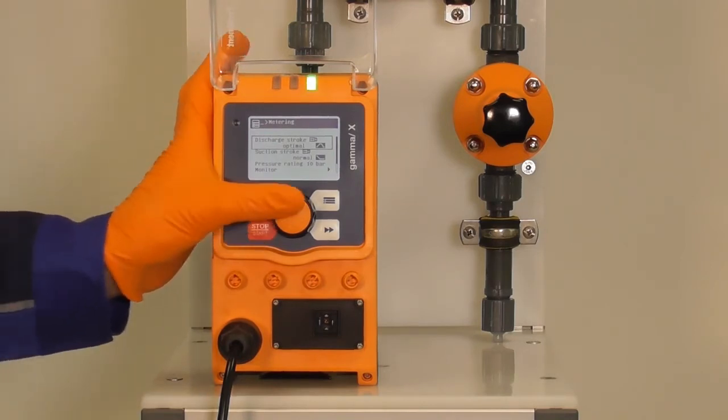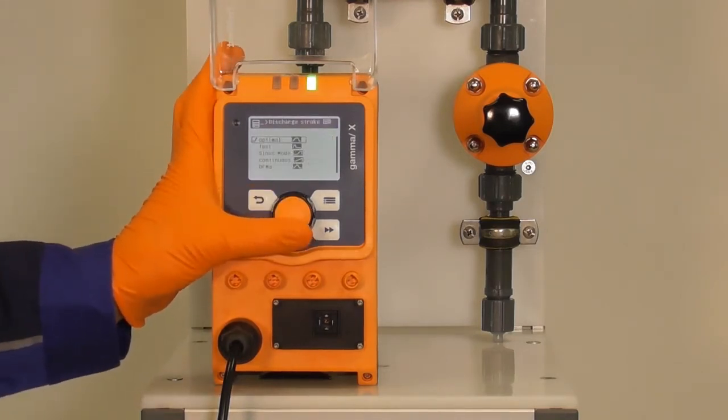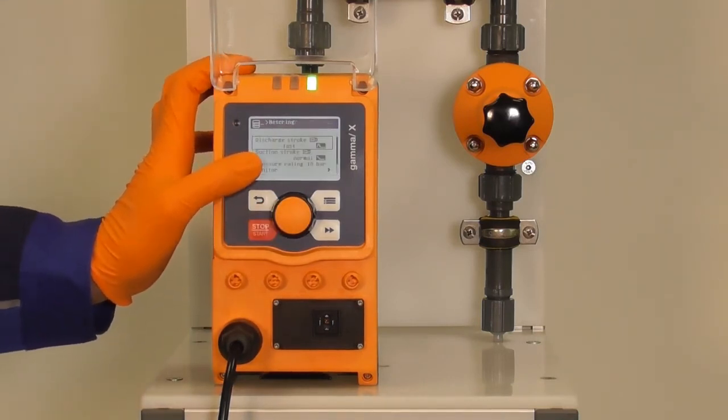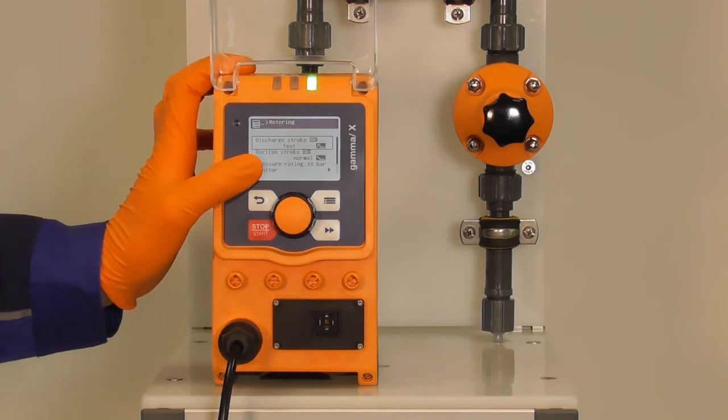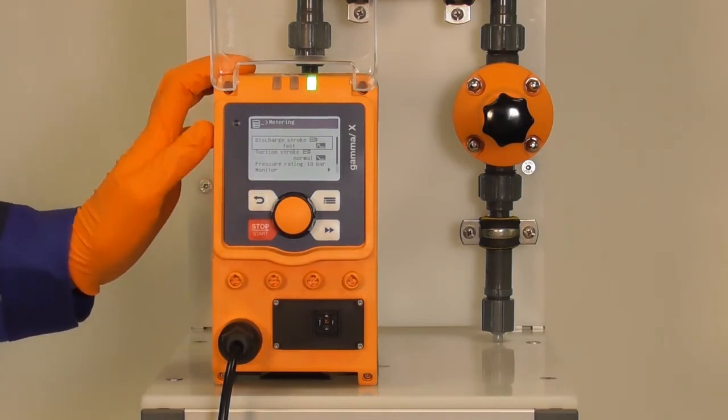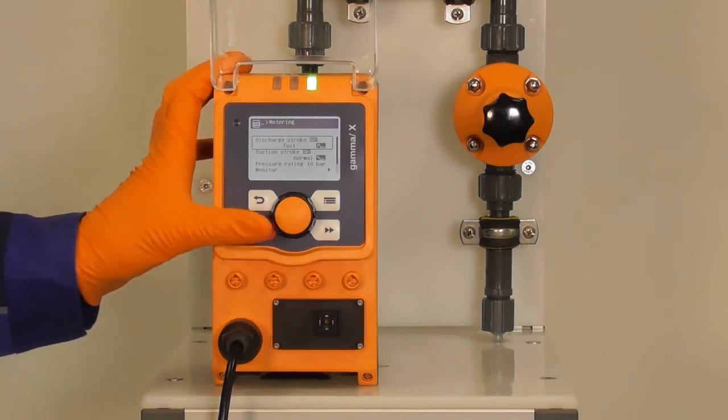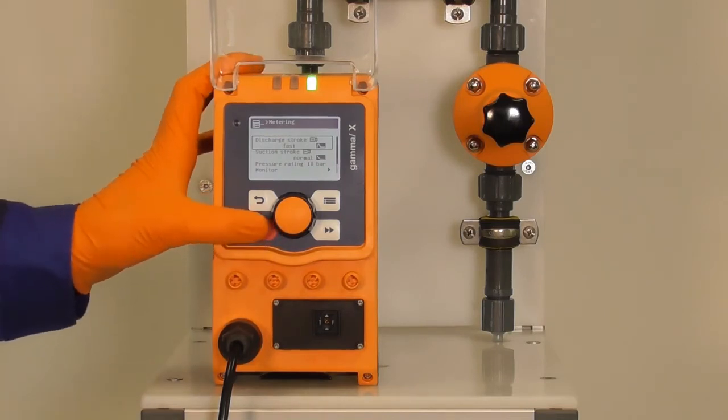Next to optimal we have also fast mode. In fast the pump is doing a really fast stroke. Some customers are using it for a good mixing or as their process just needs a fast stroke. It is especially a lot of our customers in pulp and paper are using it.